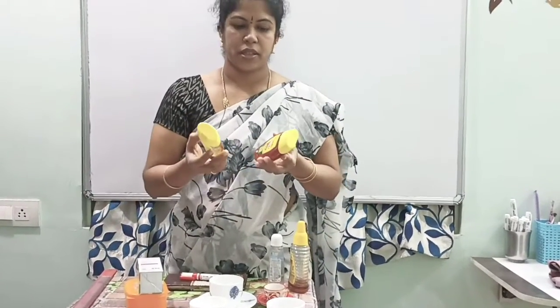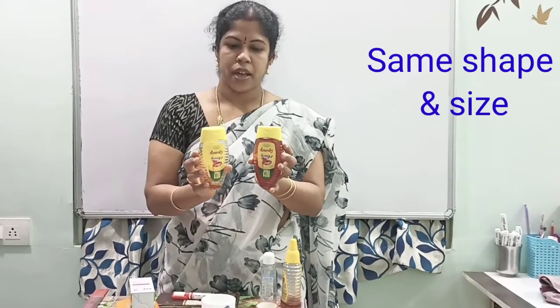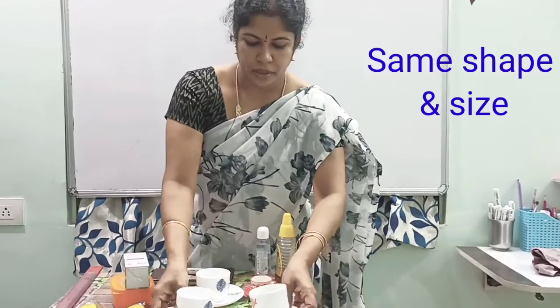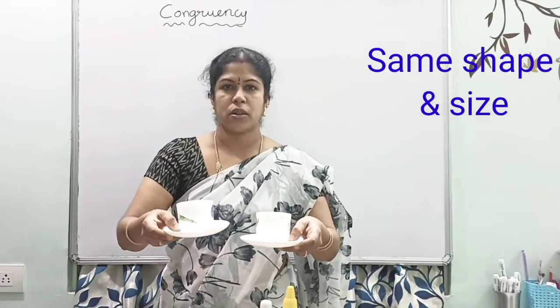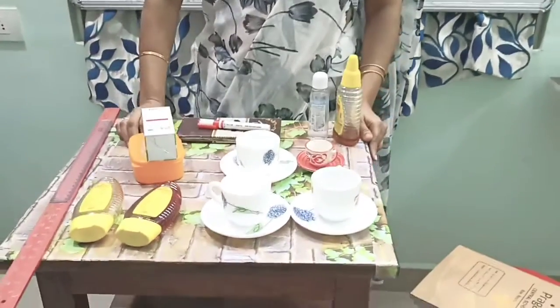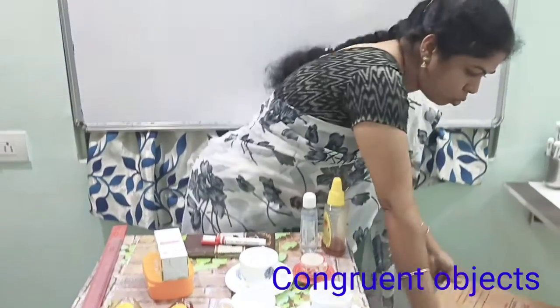Let us see these two honey bottles. If you observe these two honey bottles, they have the same shape as well as the same size. And these two cup and saucer also have the same shape and size. So, objects which have the same shape and size are known as congruent objects. These two books also have the same shape and size. Congruent objects, if you superpose them on one another, they will exactly match with one another.